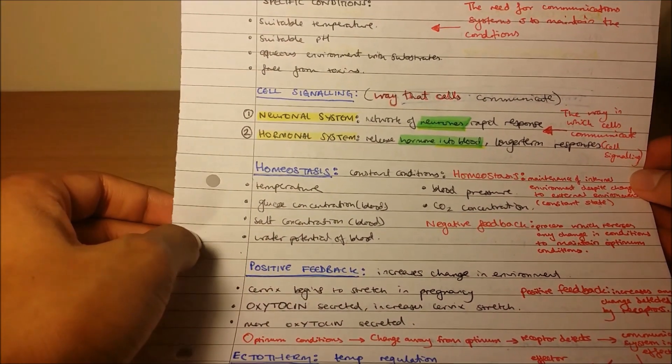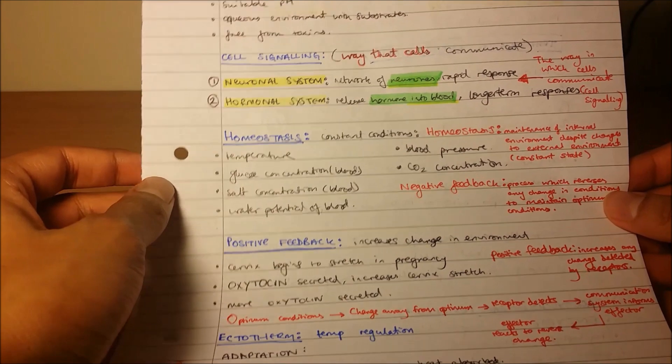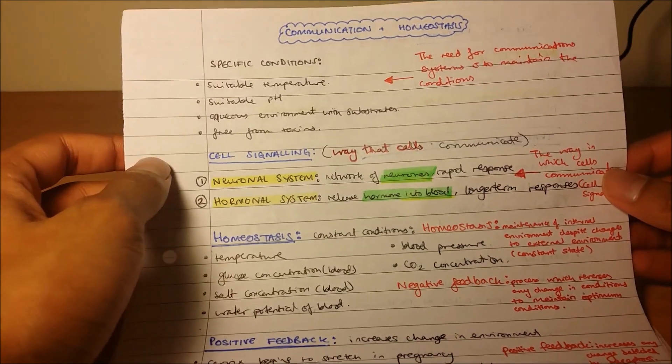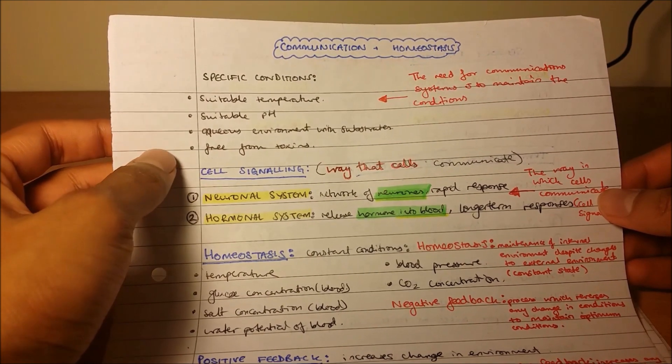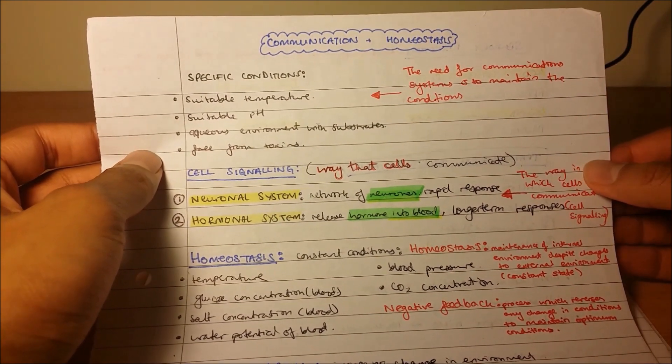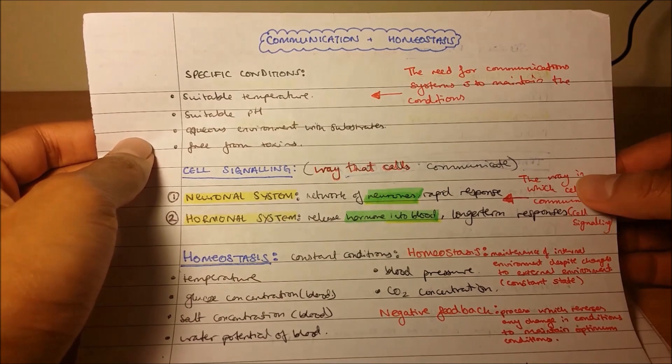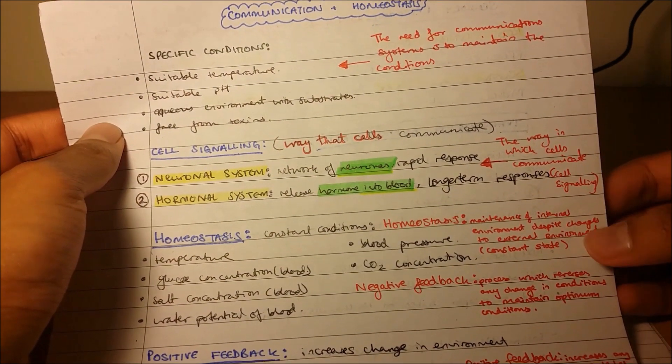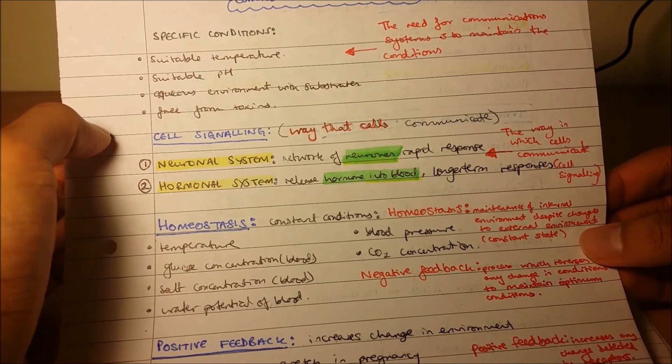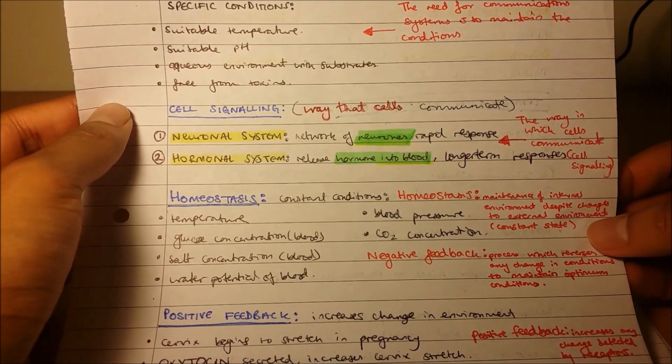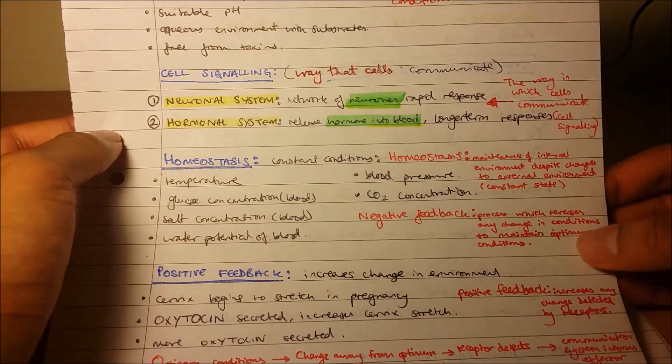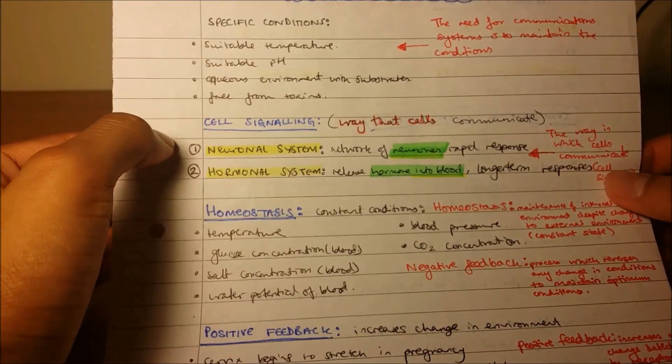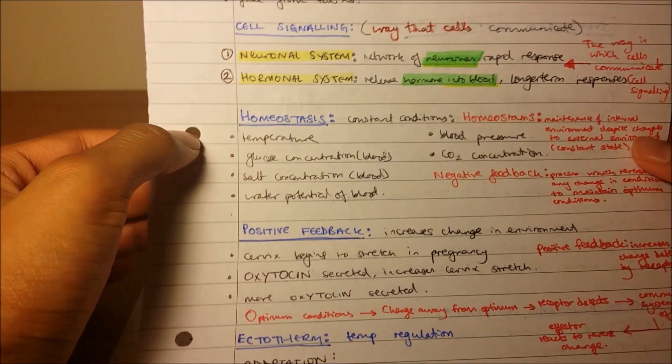Here I've got quite a colorful page. What happened here was I went through and made my notes, then I went through a month later and had a look at the specification. There were a few points that I'd missed from the specification, so these are what I wrote in red. For example, I forgot to write down the definition of homeostasis, but the specification said we needed to know that. So I wrote these down in red—points from the specification.